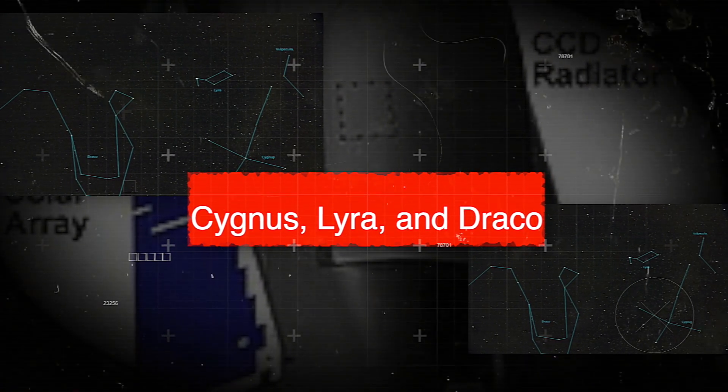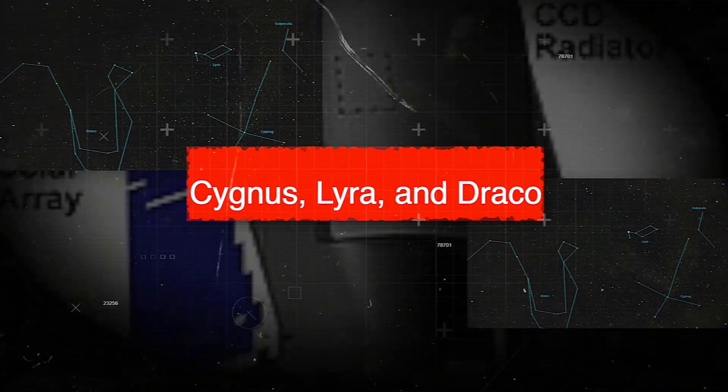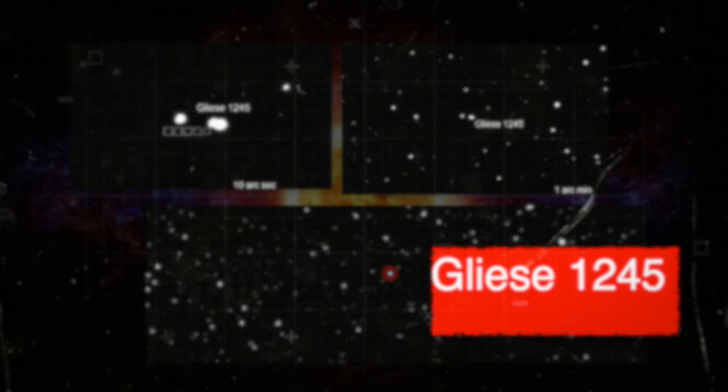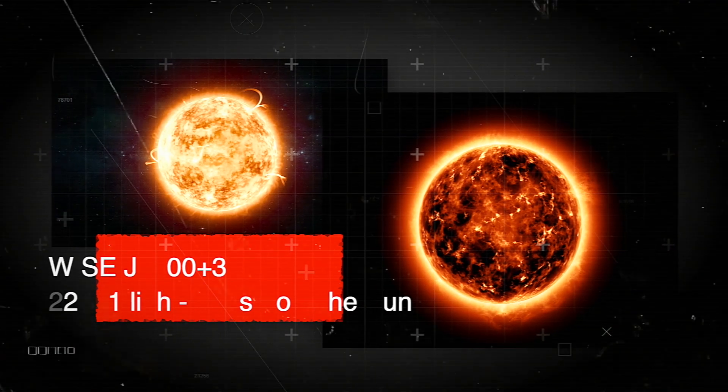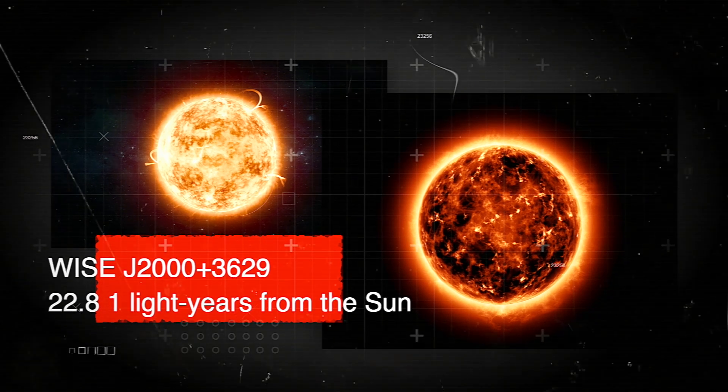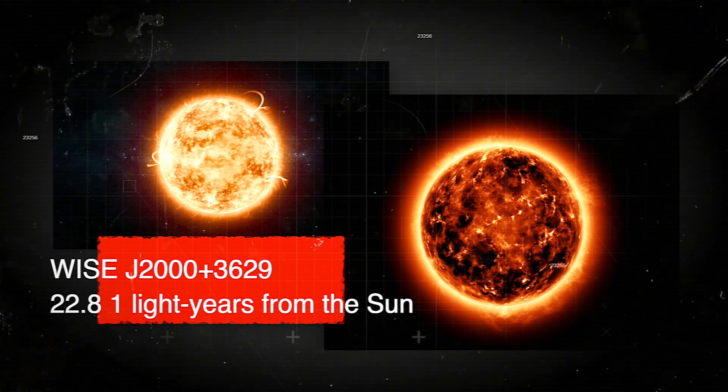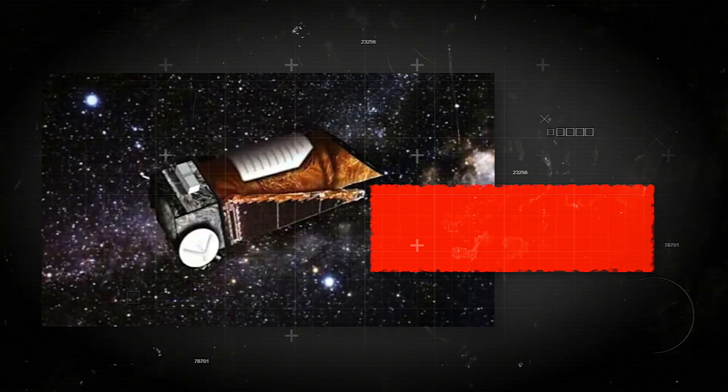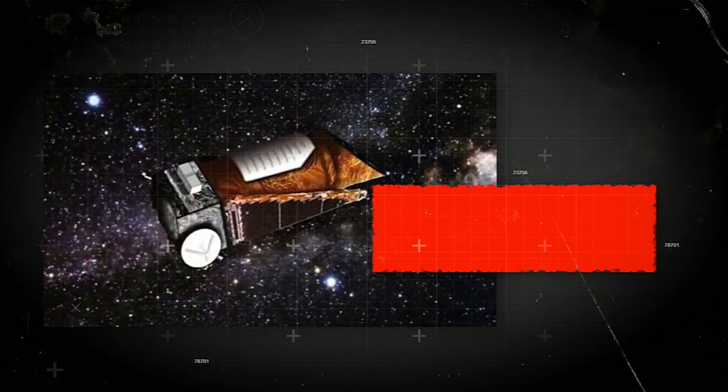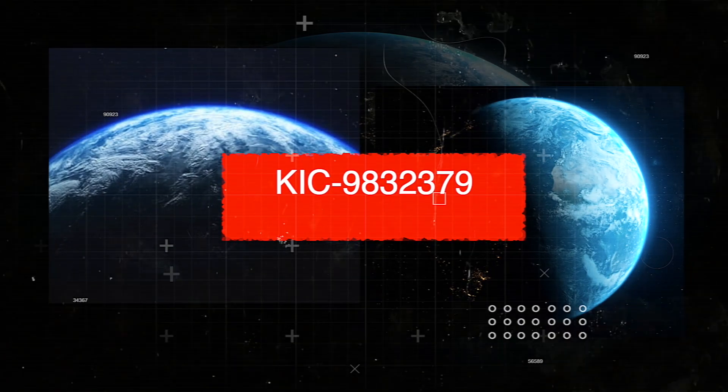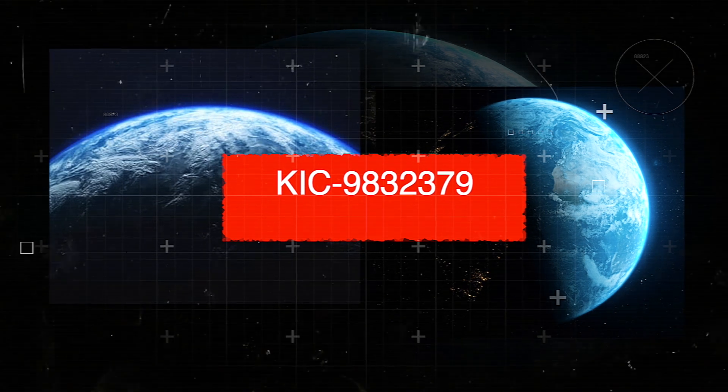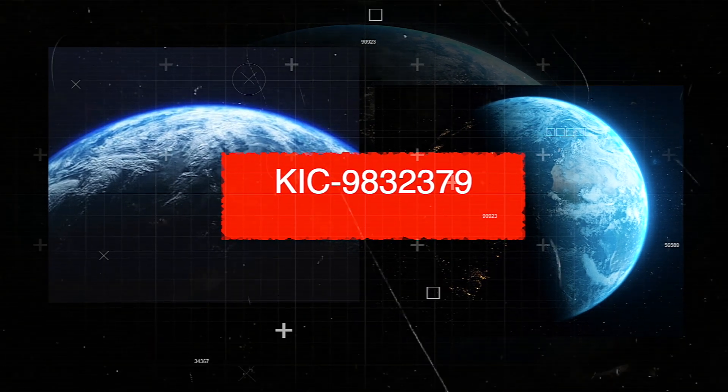The trinary star system Gliese 1245, 15 light years from the Sun, is the nearest in Kepler's range of view. WISE J2000 plus 3629, a brown dwarf 22.81 light years away from the Sun, is likewise in the field of view, but Kepler can't see it since it emits light primarily in infrared wavelengths. Recently, this very telescope has discovered the planet KIC 9832379, which, according to scientists, might be considered as Earth 2.0.